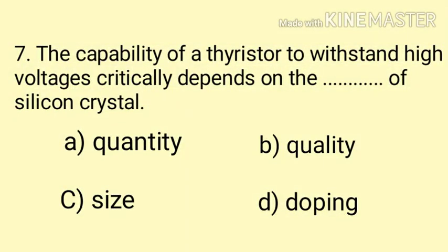Question number seven: The capability of a thyristor to extend high voltages critically depends on the __ of silicon crystal. Options include quality, quantity, size, and doping. The capability of a thyristor to extend high voltage depends on the quality. So here the correct answer is option B, quality.